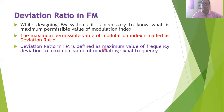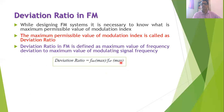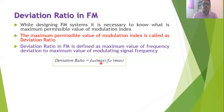The deviation ratio in FM is defined as the maximum value of frequency deviation divided by the maximum value of modulating signal frequency. That is, deviation ratio equals delta-f(max) divided by f(modulating, max). The definition is similar to that of modulation index, except that here both the numerator and denominator use the maximum permissible values.